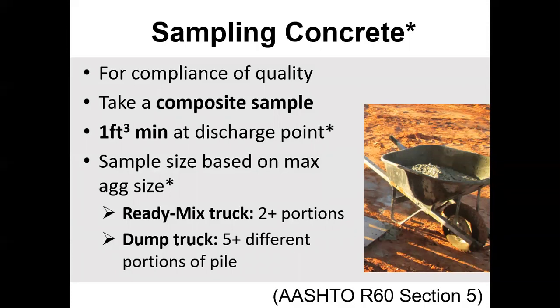For ready-mix trucks you're going to get two portions and combine them together — two increments. For dump trucks, say if you're doing a slip form paver with a very low slump and dumping the concrete out of a dump truck, you really want to take five portions, because that concrete can look a little different if it has some segregation issues. Put those five portions together into one composite sample.